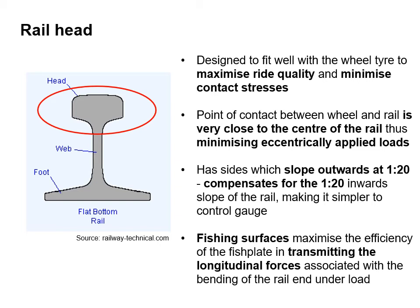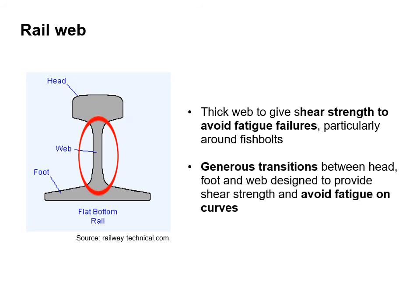The rail head has sides which slope outwards at 1 in 20, compensating for the 1 in 20 inward slope of the rail, making it simpler to control gauge. Fishing surfaces maximise the efficiency of the fish plate in transmitting the longitudinal forces of the rail. The rail web is thick to give shear strength and avoid fatigue failures, particularly around fish bolts. The generous transitions between head, foot and web are designed to provide shear strength and avoid fatigue on curves.